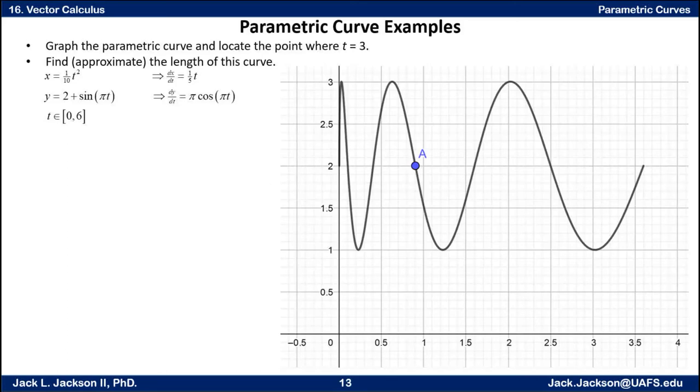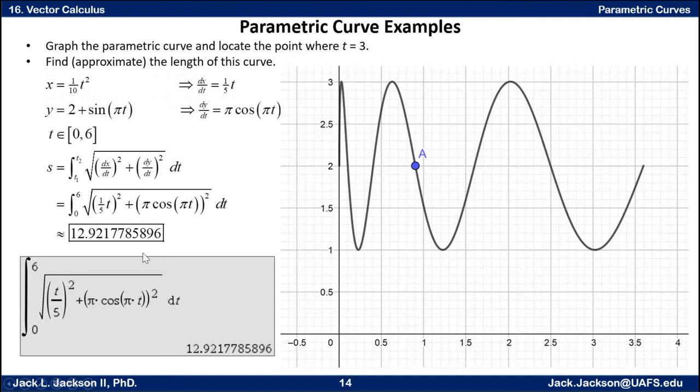We want to set that up as an exact value with an integral, and we're probably going to approximate the integral this time. Let's see if we can go through the steps. This stuff at the top, our derivatives here, may be useful. s is the integral from lower t to upper t of the square root of (dx/dt)² plus (dy/dt)² and then integrate with respect to t. So it's got dt on the outside. That's the integral of ds is s. Our t runs from 0 to 6. dx/dt is one-fifth t, so we substitute that in here. dy/dt is π cosine of pi t, we substitute that in.